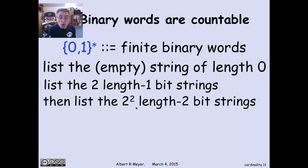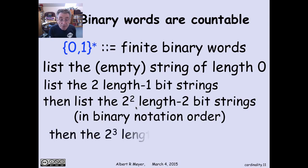Then let's list all the length 2 strings. Well, there's four length 2 binary strings. And let's just list them in some sensible order, say, by their binary representation. And then keep going, list all the length 3 binary strings. There's eight of those.